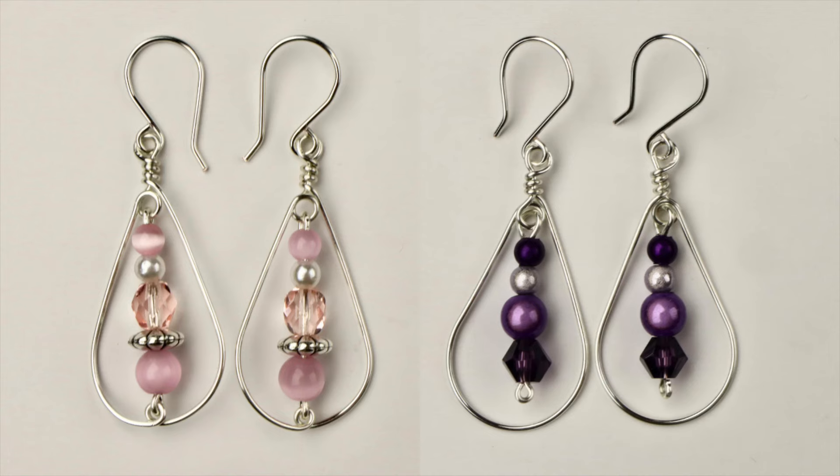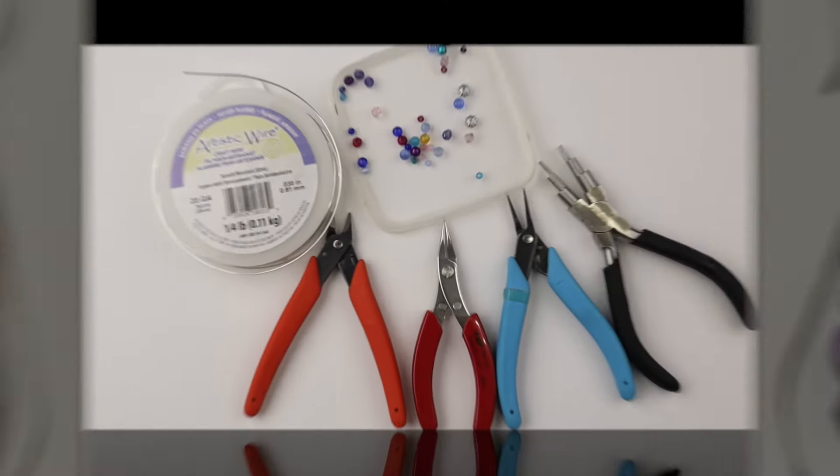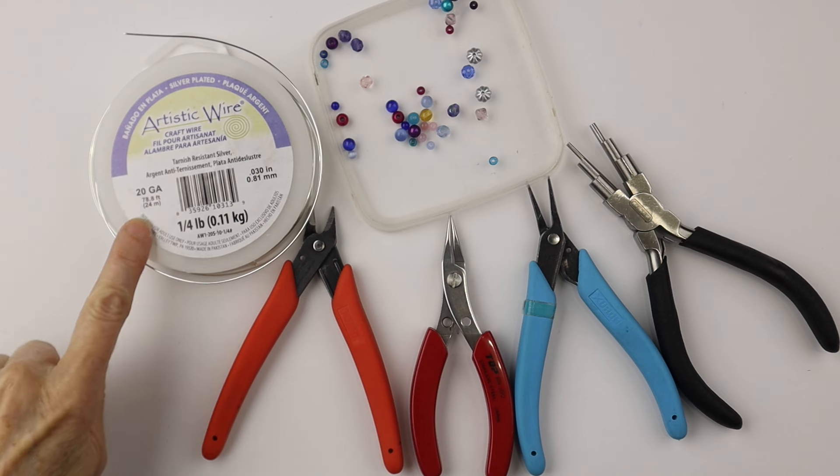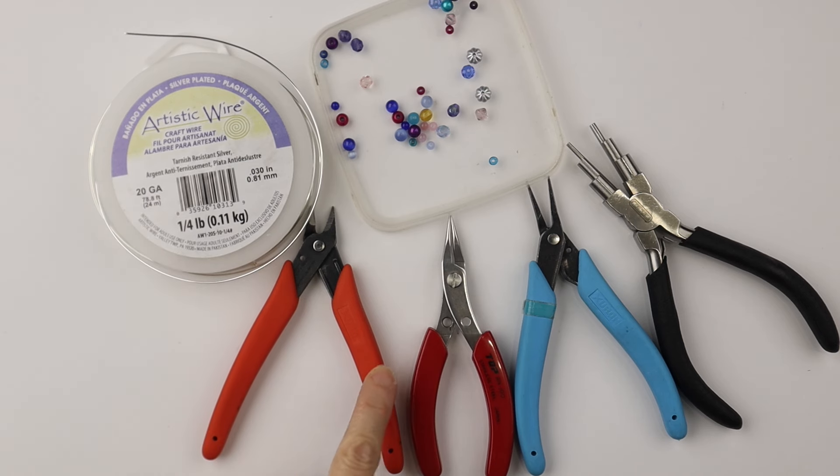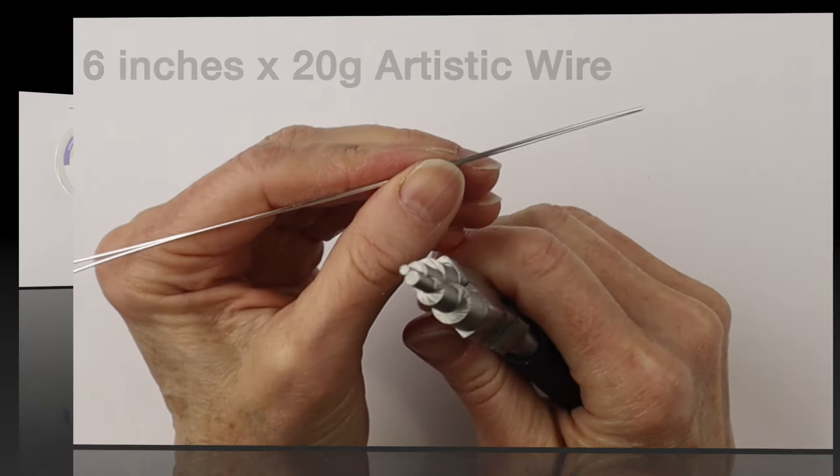Hey there, Heather Boyd Wire here. Today I'm making beautiful teardrop earrings with artistic wire. We are using 20 gauge artistic wire. I need cutters, round pliers, flat pliers, my bail making pliers, and a variety of beads.